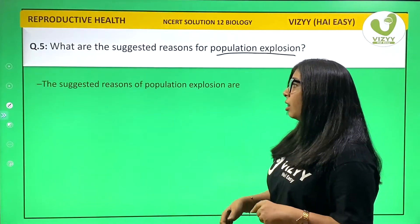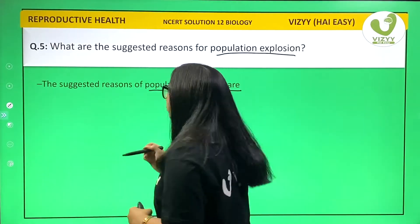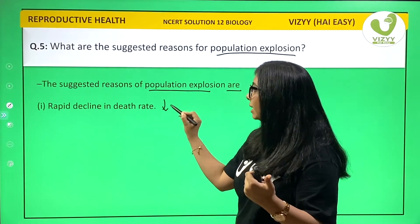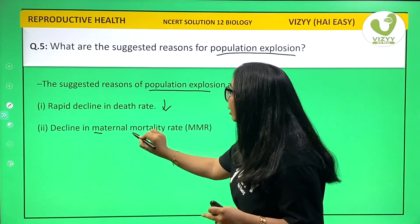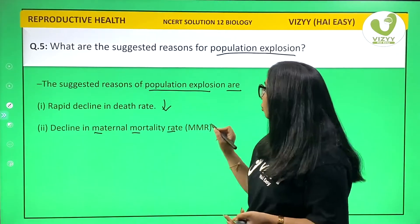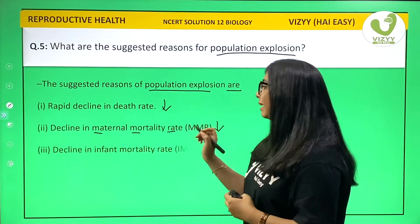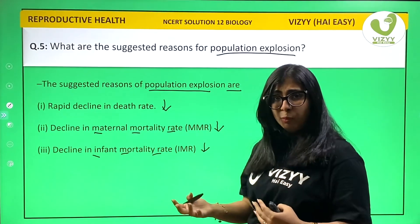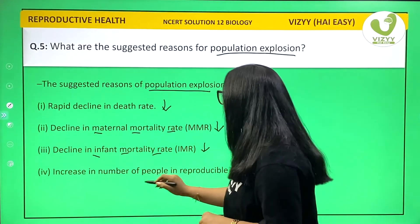The suggested reasons for population explosion are: one, rapid decline of death rate — so the death rate has reduced. Two, decline in maternal mortality rate — mothers who die giving birth has reduced. Three, decline in infant mortality rate — babies who die after being born has also reduced.